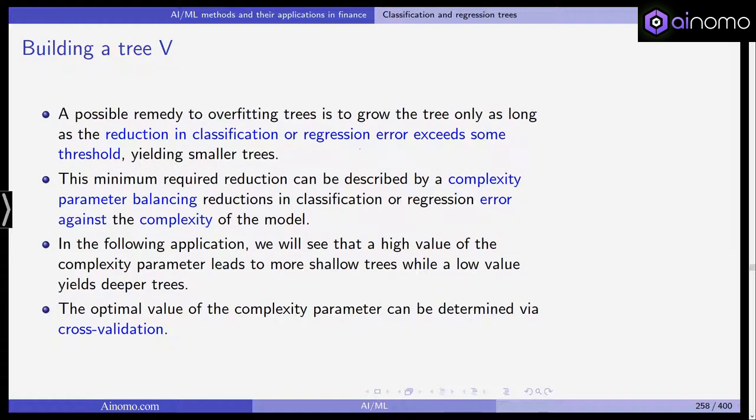Another possible remedy to overfitting trees is to grow the tree only as long as the reduction in classification or regression error exceeds some threshold. This will lead to smaller trees and this minimum required reduction can be described by a complexity parameter balancing reductions in classification or regression error against the complexity of the model.